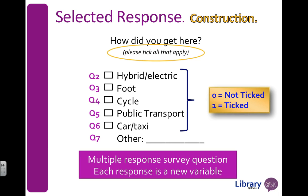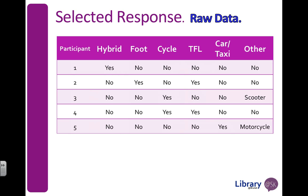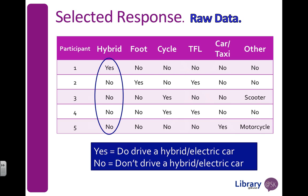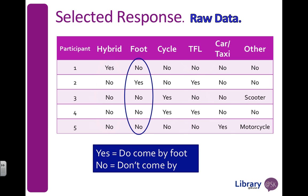When we come to code it, we need to code it as ticked and not ticked. Typically I code this as zero and one — zero means it's not ticked, one means it was ticked. Here's some example data: participant IDs on the side, all options across the top as variables, and the responses filled in. For hybrid, if a participant ticked it I give it a one (yes), meaning they do drive a hybrid or electric car. No means they don't. Similarly, foot: yes means they came by foot, no means they didn't.